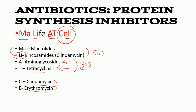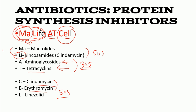The last letter, L, stands for linezolid, which is also a 50S inhibitor. So in 'my life at cell': the 'my' segment is a 50S inhibitor, 'life' is also 50S, 'at' represents 30S inhibitors, and 'cell' is back to 50S inhibitors. This is how you should remember all the antibiotics and their classification.